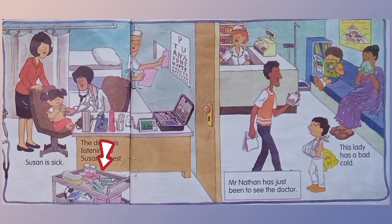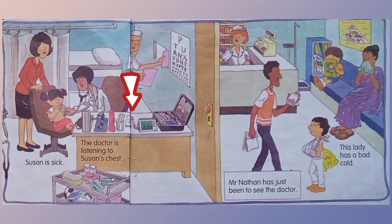This is a trolley. We use it for fetching things. What do you see in the trolley? I can see needles, kidney dish, syringes, medicine, cotton wool, and a football. The eye chart is stuck on the wall. What do you see on the doctor's table? I can see a doctor's kit, calendar, pencil, paper, tongue depressor, torch, and stethoscope.